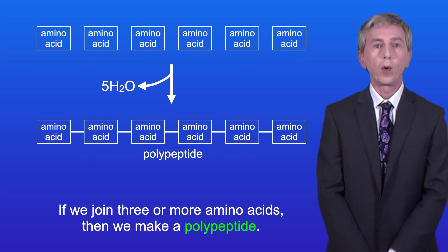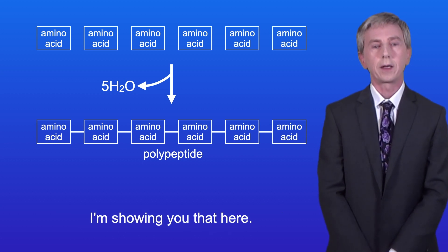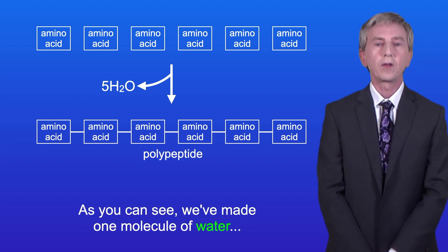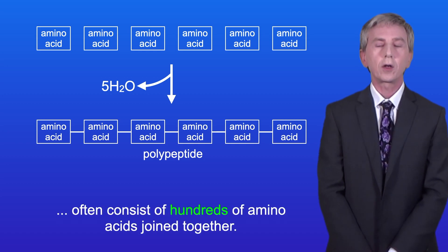Now if we join three or more amino acids, then we make a polypeptide, and I'm showing you that here. As you can see we've made one molecule of water for every peptide bond that we formed. Now I should point out that polypeptides often consist of hundreds of amino acids joined together.